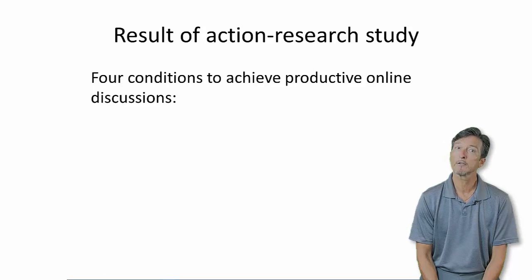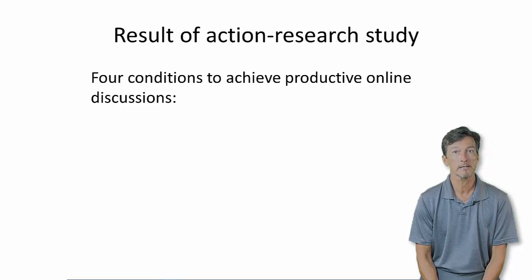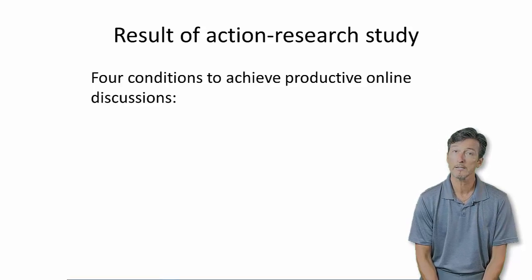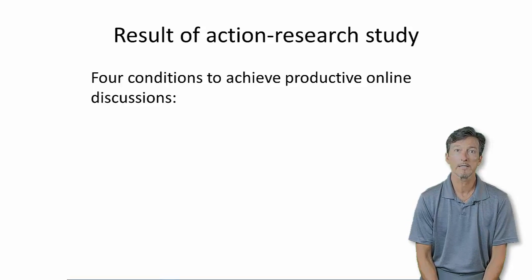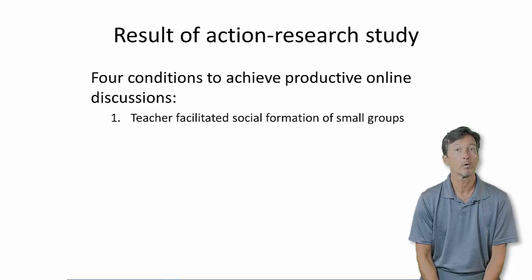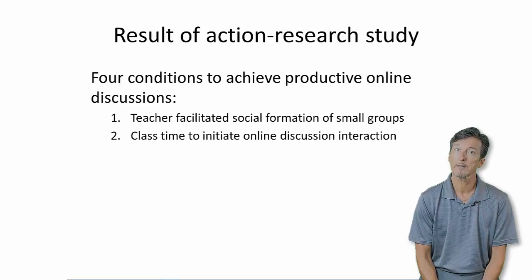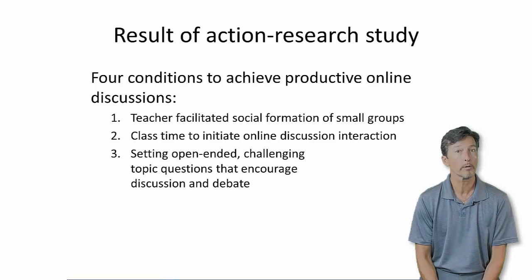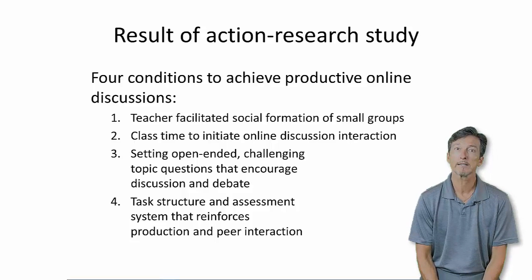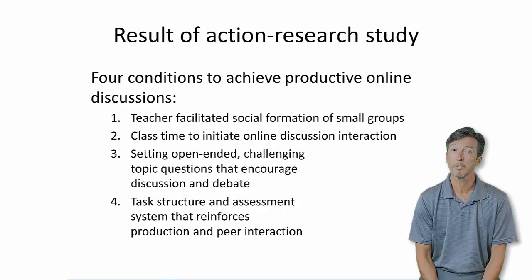After trying many learning designs for a blended learning discussion, I found that to create an effective activity which produced lots of peer-to-peer interactions, four conditions needed to exist. One, the social formation of small groups. Two, class time to initiate online discussions. Three, setting open-ended topic questions. Four, a task structure and assessment system that reinforces production and peer interaction.